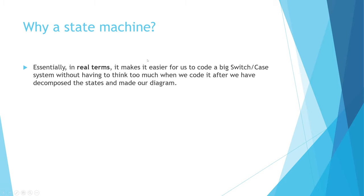Essentially, we use a state machine as a tool — it helps us decompose an issue, decompose a problem that we then need to program. Once you've drawn your state diagram, it's much less brain power to actually turn that into code. If you don't do a state diagram beforehand, you will find that you will struggle to program it and won't know what happens in a given situation. Drawing a state diagram makes it much easier to write it line by line and move forward to a finished product.